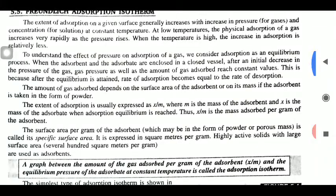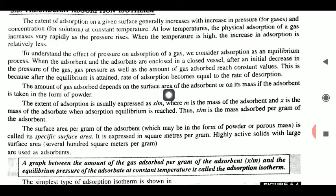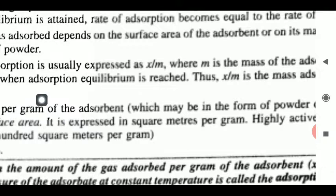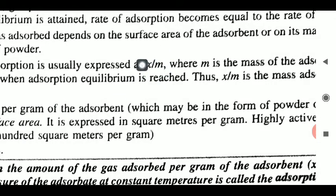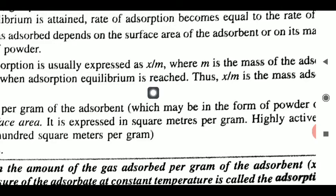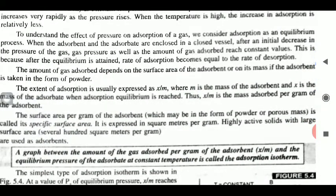Overall adsorption को बताने के लिए दो factor बताने होंगे। यहाँ पर x/m लिखा हुआ है। x का मतलब है the quantity of the adsorbate जो किसी भी adsorbent की surface पे आके adsorb करती है। जो m है, this is the surface area of the adsorbent। So x is the quantity of adsorbate, m is the surface area of adsorbent, and x/m is the extent of adsorption।